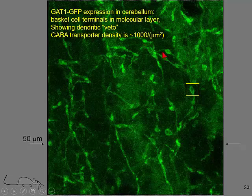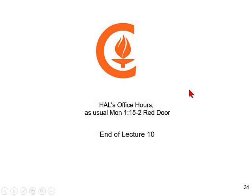Using quantitative confocal microscopy calibrated with individual fluorescent GFP molecules, it is now possible to show that the transporter density is around 1,000 per square micron. My office hours are as usual — the red door. See you on Wednesday.